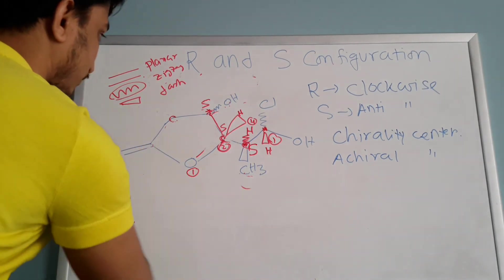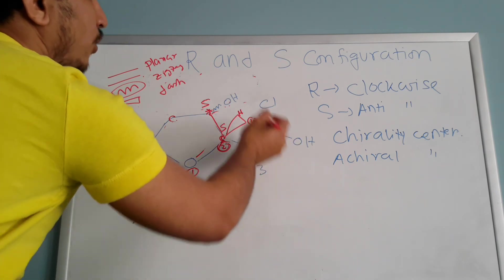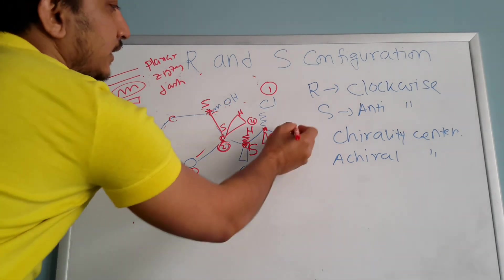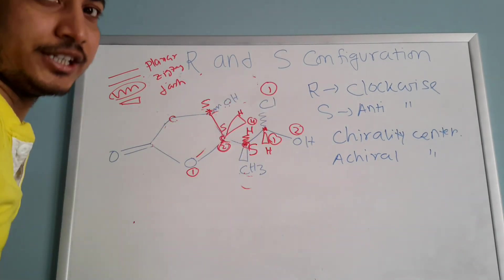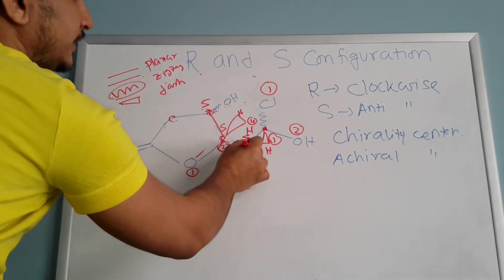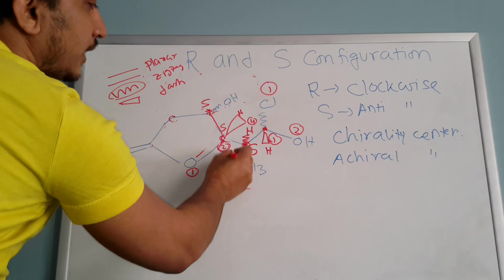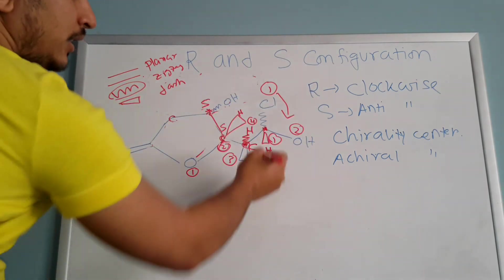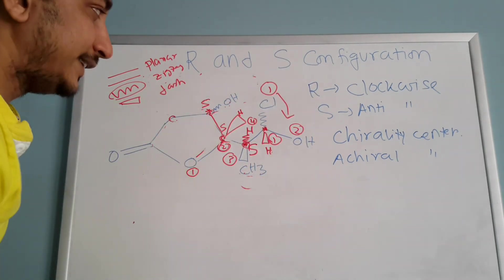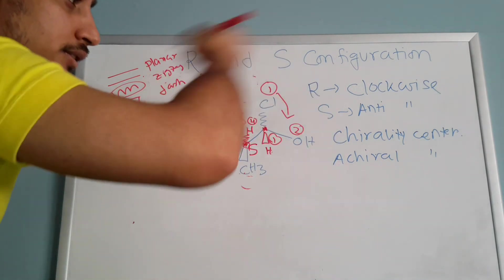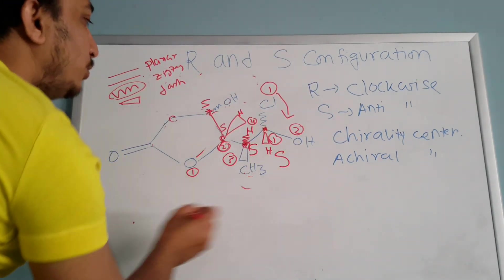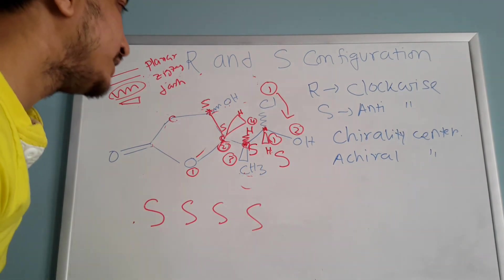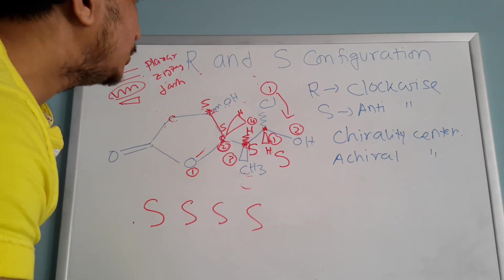For the last one, the carbon including oxygen — oxygen's atomic number is highest, so that is number one. The next oxygen directly connected gives number two. This carbon is number three and hydrogen is number four. The sequence goes clockwise, but lowest atomic number is towards you — so if it looks like R it would be S. This is also S configuration.